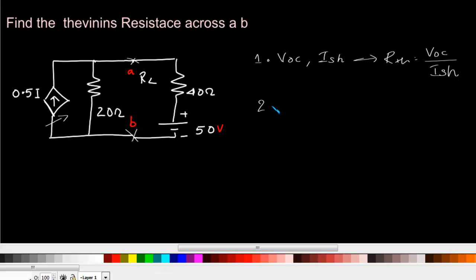Another approach is put a test source, either a voltage source or a current source, and find out the other parameters. If we put a voltage source across these terminals, find the current through it and then we have resistance equal to V0 by I. And in case we are putting a current source, we have to find out what is the voltage across that source in order to find out what is the Thevenin's resistance.